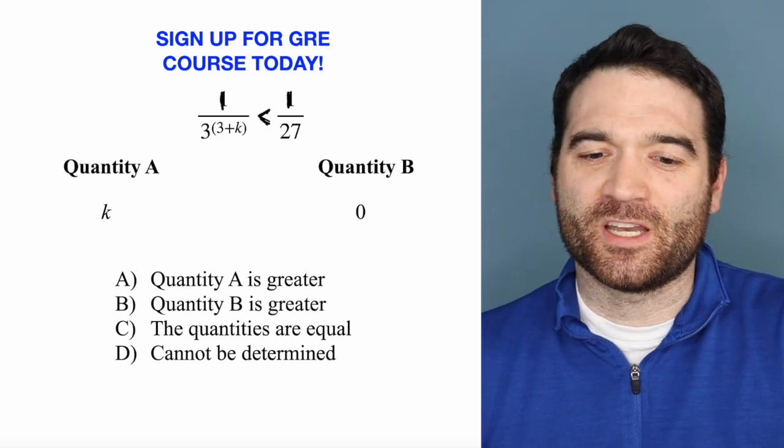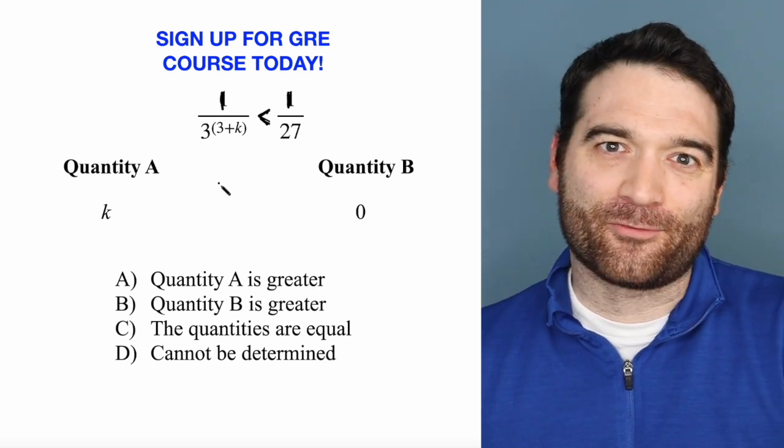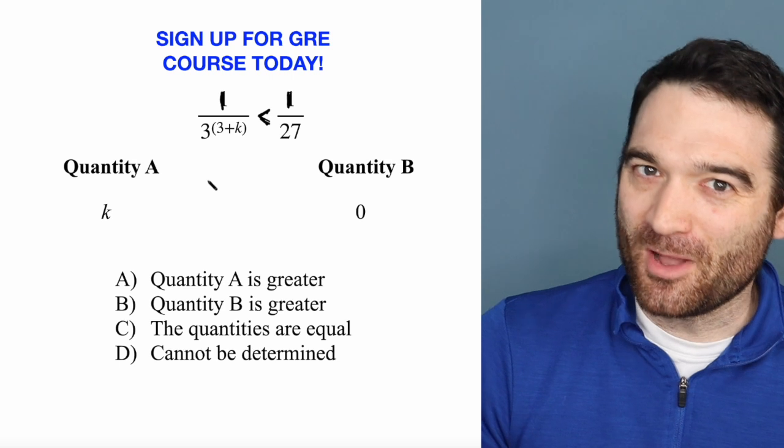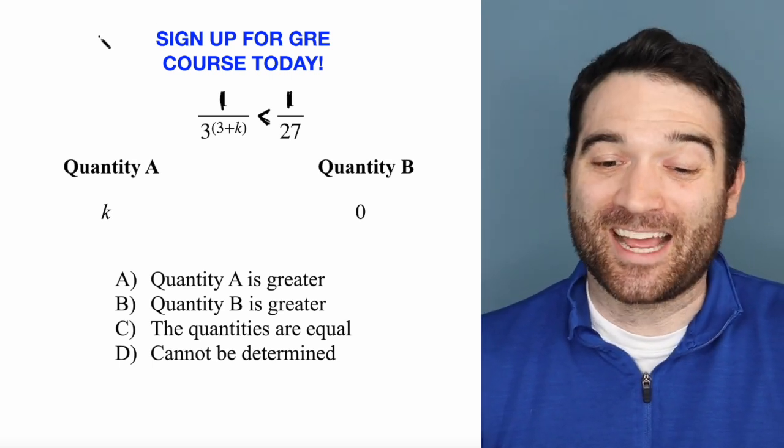Think about this in terms of denominators. If I have a really big denominator, the fraction is going to be really small. And if I have a really small denominator, the fraction is going to be really big. It's kind of backwards.